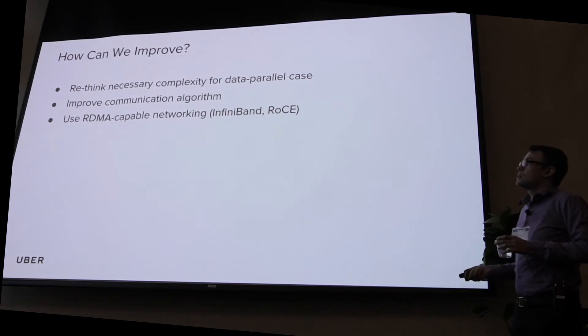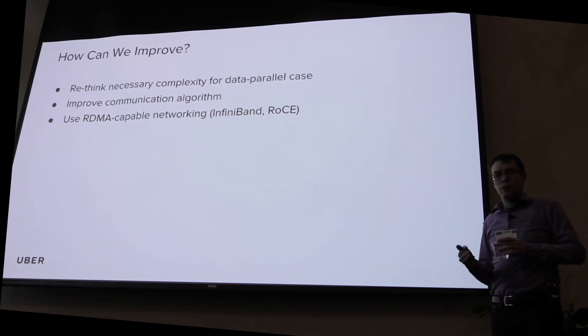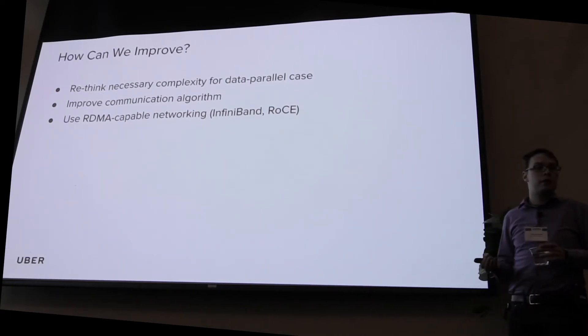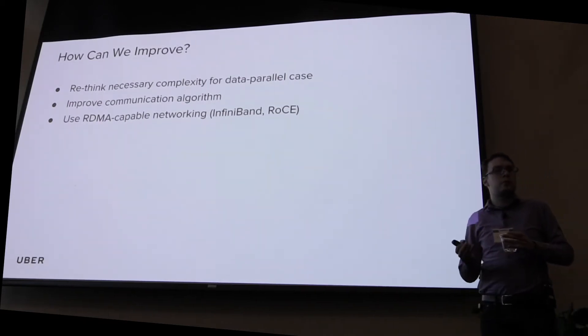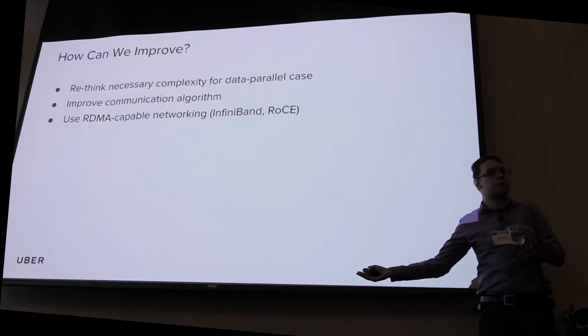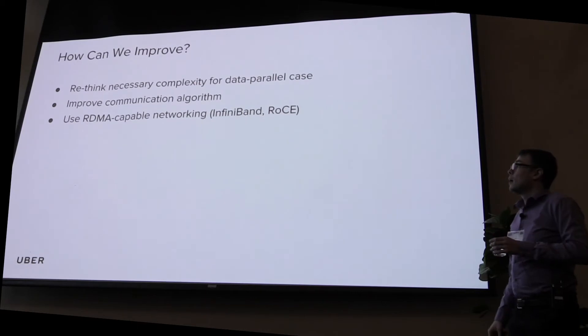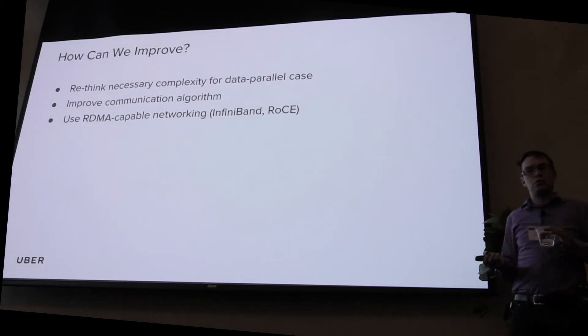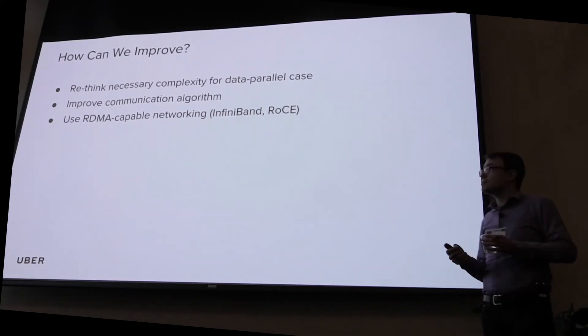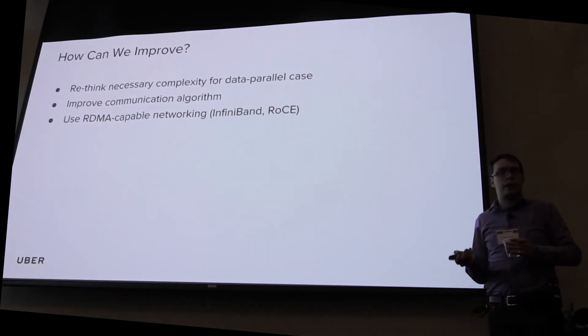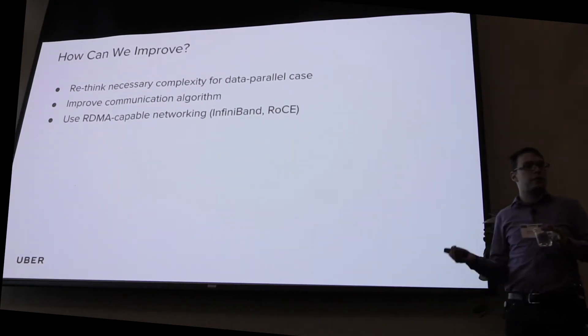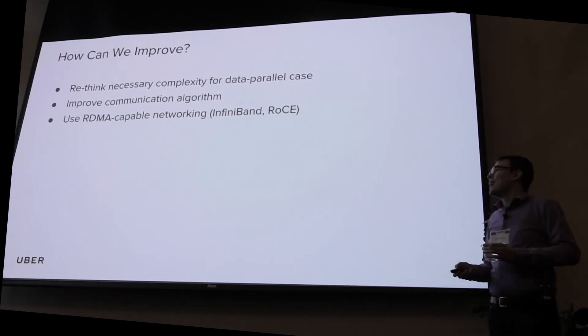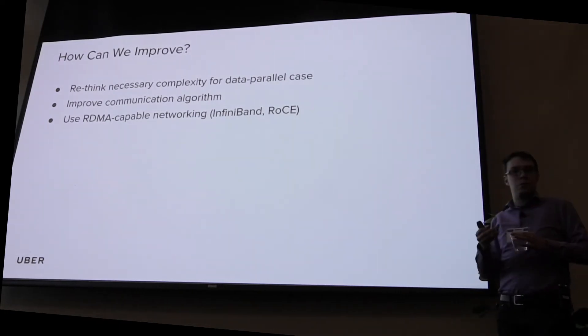So there are things that we can improve. One thing is we wanted to rethink whether all the separations that existed for parameter server case were actually necessary for data parallel training. Because data parallel should be pretty simple - you basically have a model, you just want to run it on many machines. That's it. That's conceptually everything that you want to know. We wanted to improve the communication algorithm. So instead of doing one-to-all or all-to-all, we wanted to do something more efficient. And then we wanted to use RDMA-capable network just because our data center had it and nothing was using it so far. And we wanted to use both InfiniBand or RoCE.